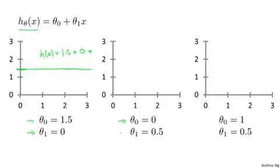If Theta 0 equals 0, Theta 1 equals 0.5, then the hypothesis will look like this. And it should pass through this point 2, 1, since you now have h of x, or h subscript theta of x, but sometimes I'll just omit theta for brevity. So h of x would be equal to just 0.5 times x, which looks like that.